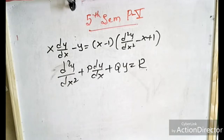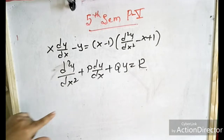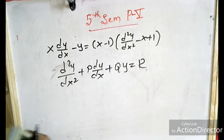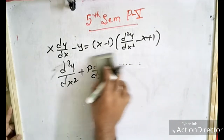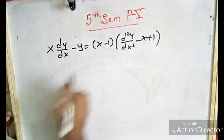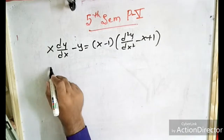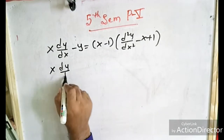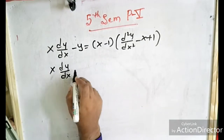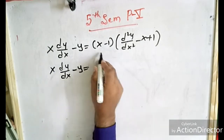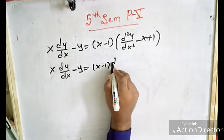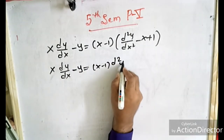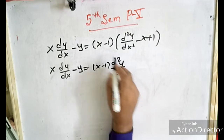First we have to convert the given problem to this standard form. Let's simplify. We have x·dy/dx minus y, which is equal to (x minus 1) multiplied into d²y/dx².